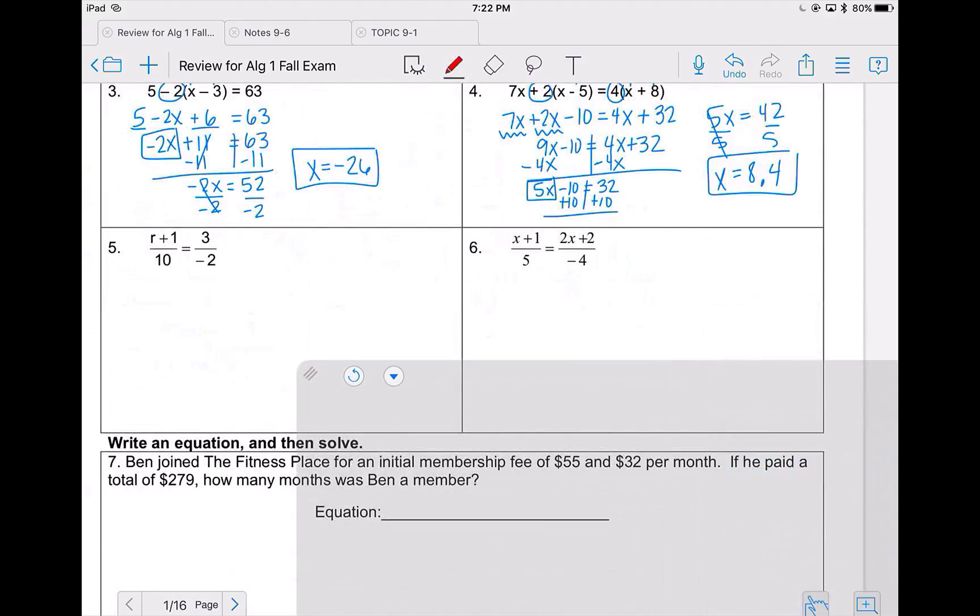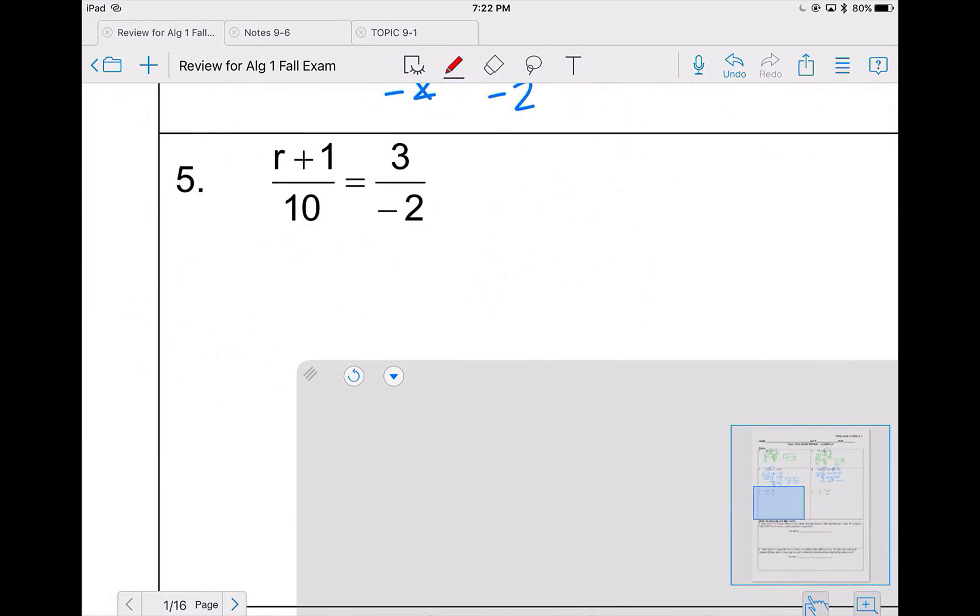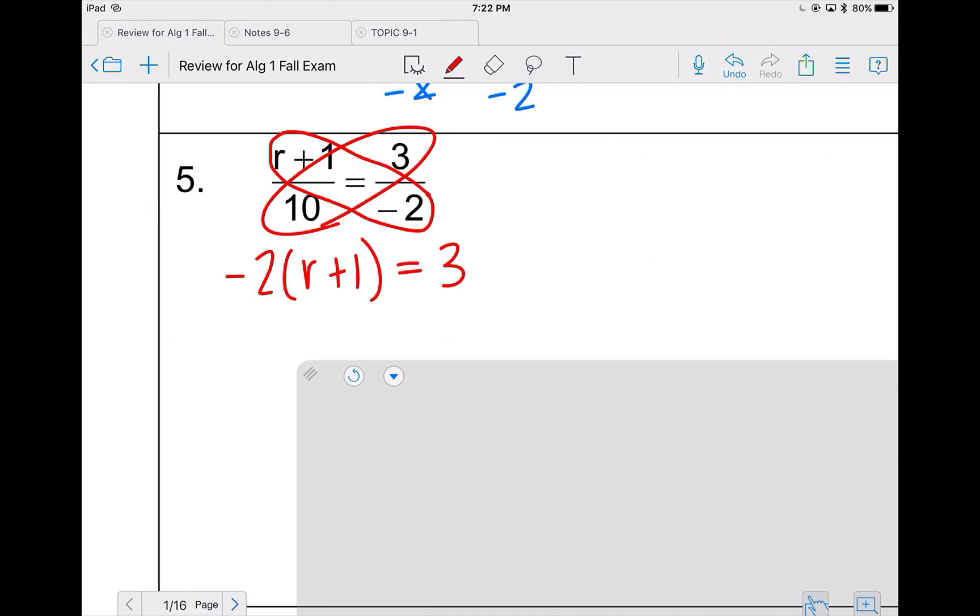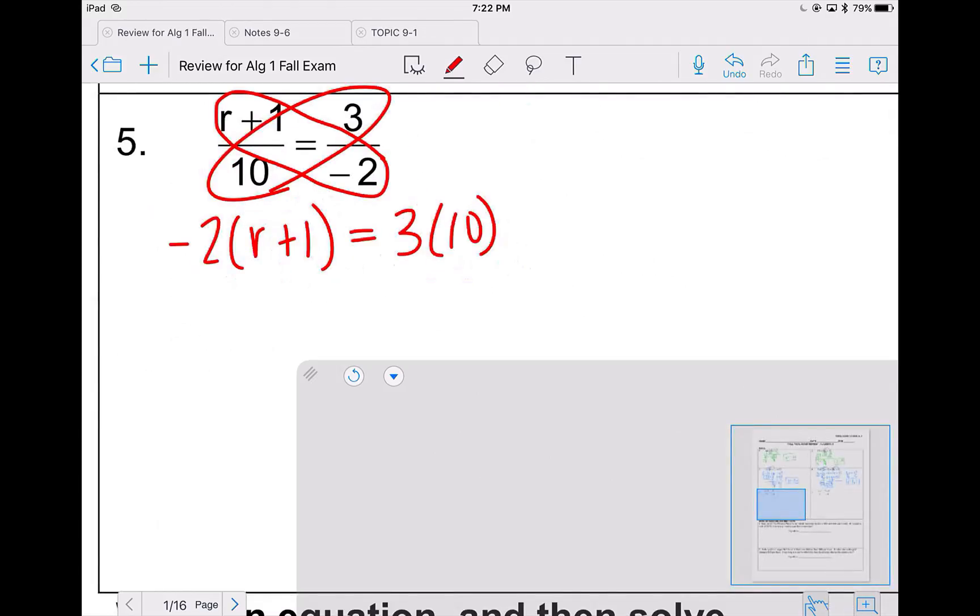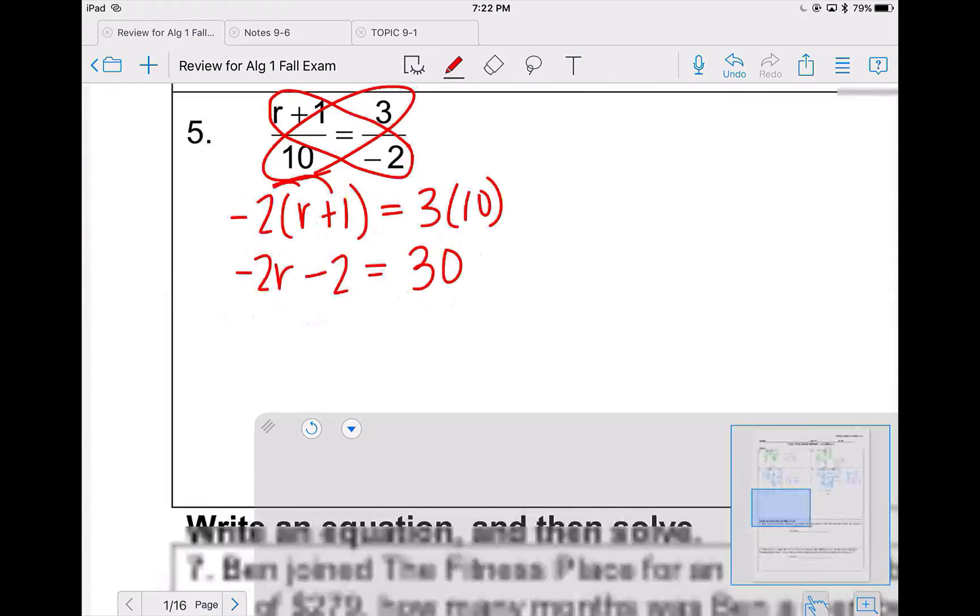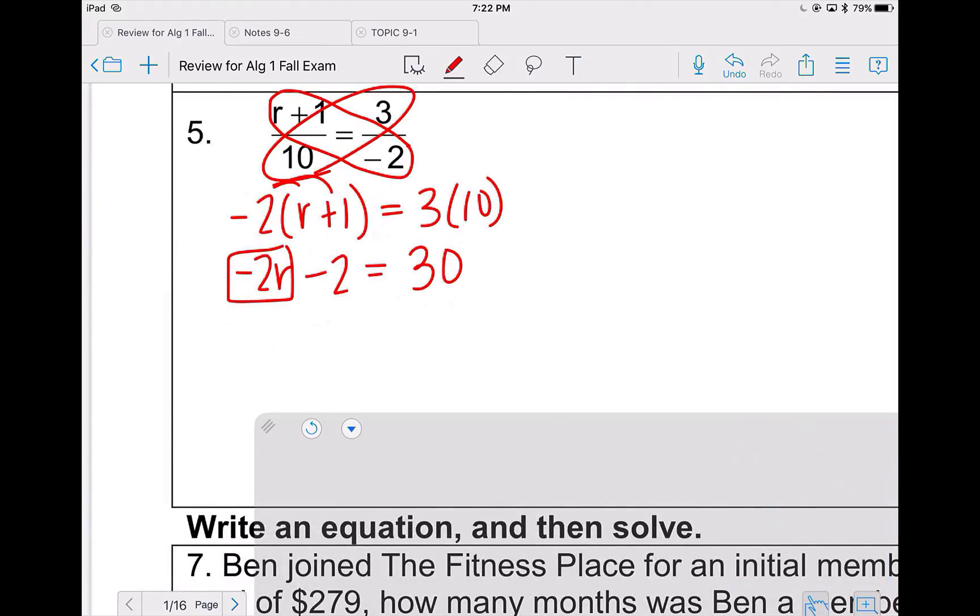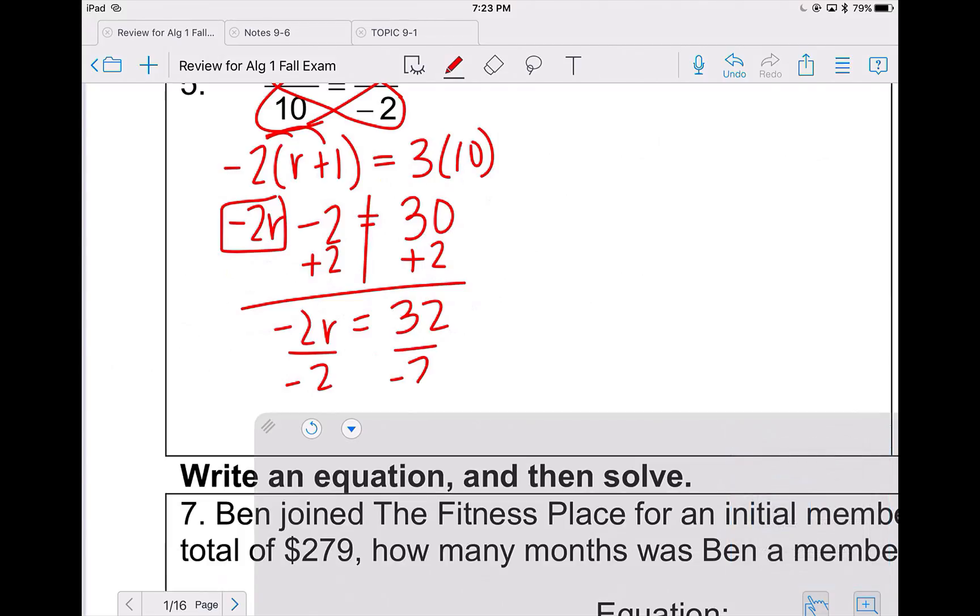Problems 5 and 6, we have something similar going on here but different than anything we've seen on 1 through 4. Remember that in order to get rid of this, you need to butterfly it out. So negative 2 times r plus 1 will equal 3 times 10. So I'm going to distribute negative 2 times r, negative 2 times 1 and 3 times 10. Now I solve like I did starting on problem 1. Add 2 to both sides, so negative 2r equals 32 and divide by negative 2 to get a final answer of negative 16.